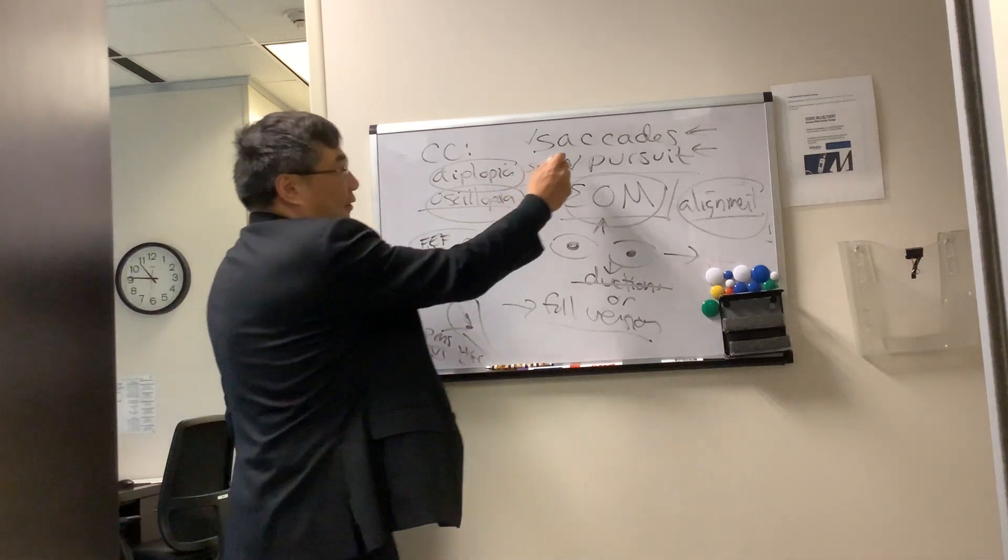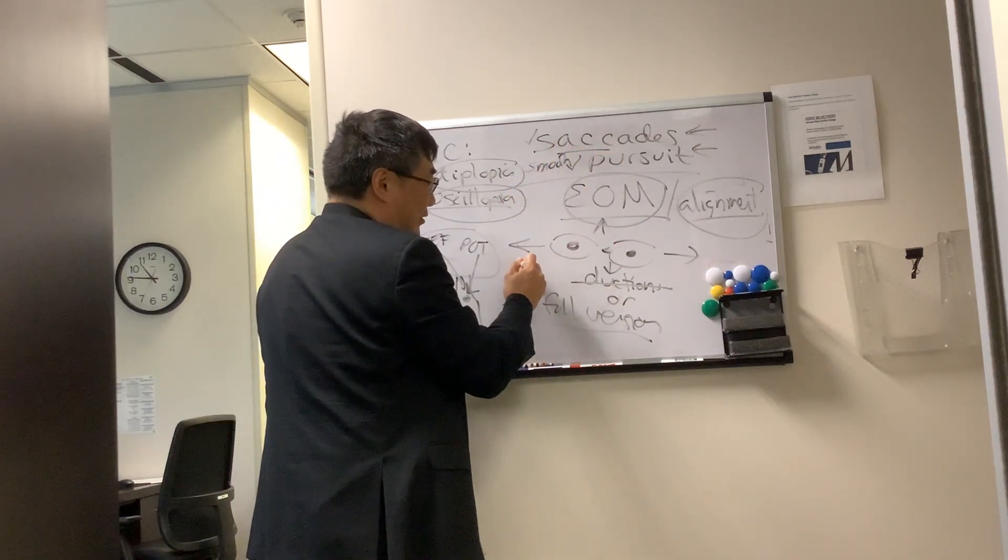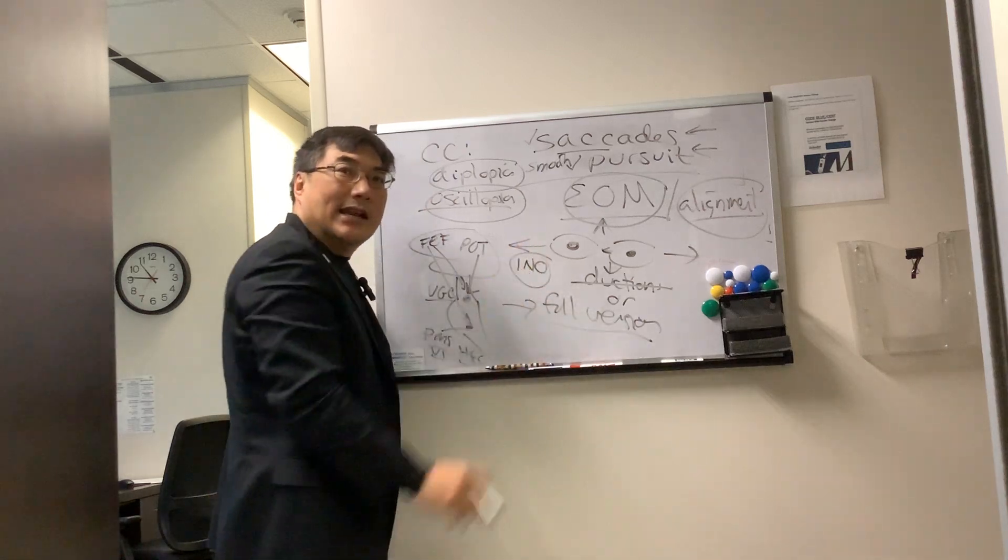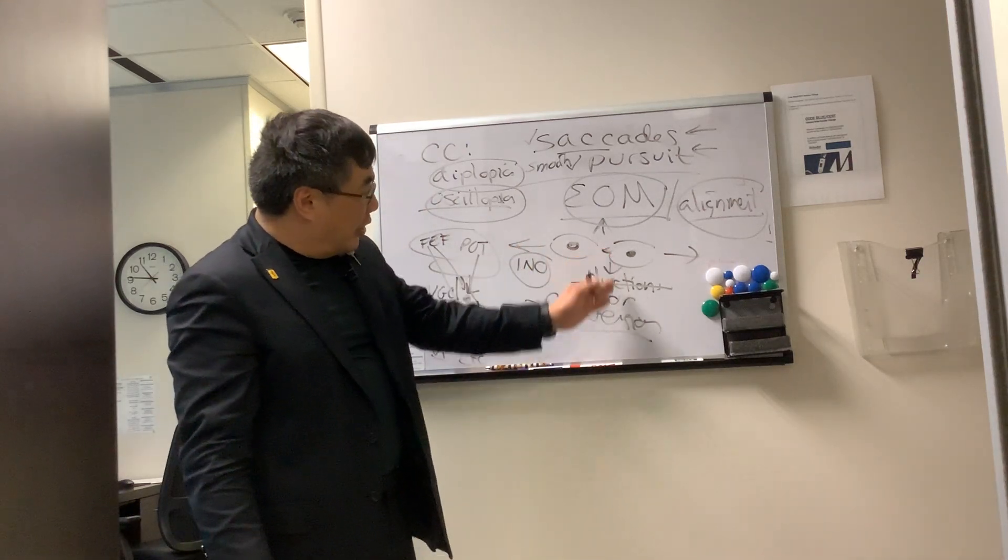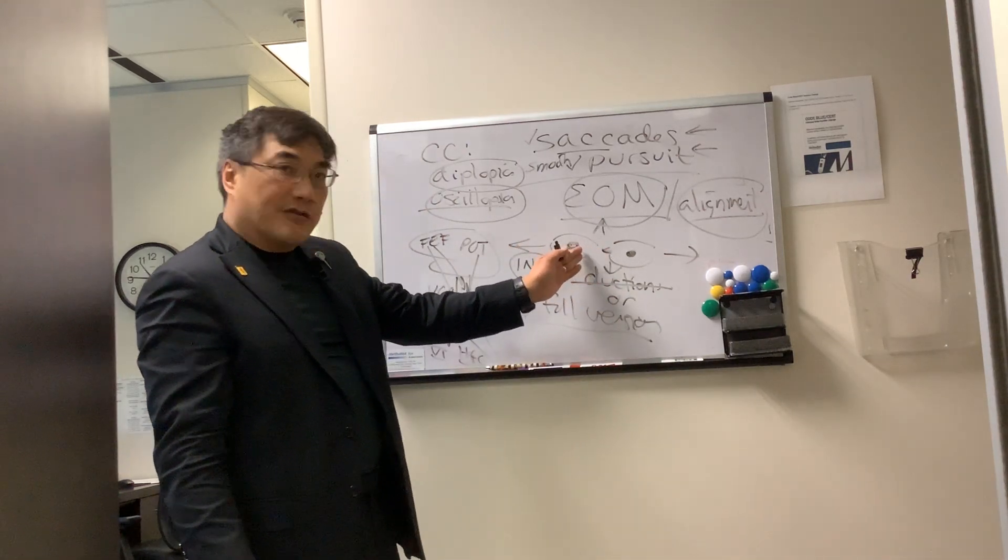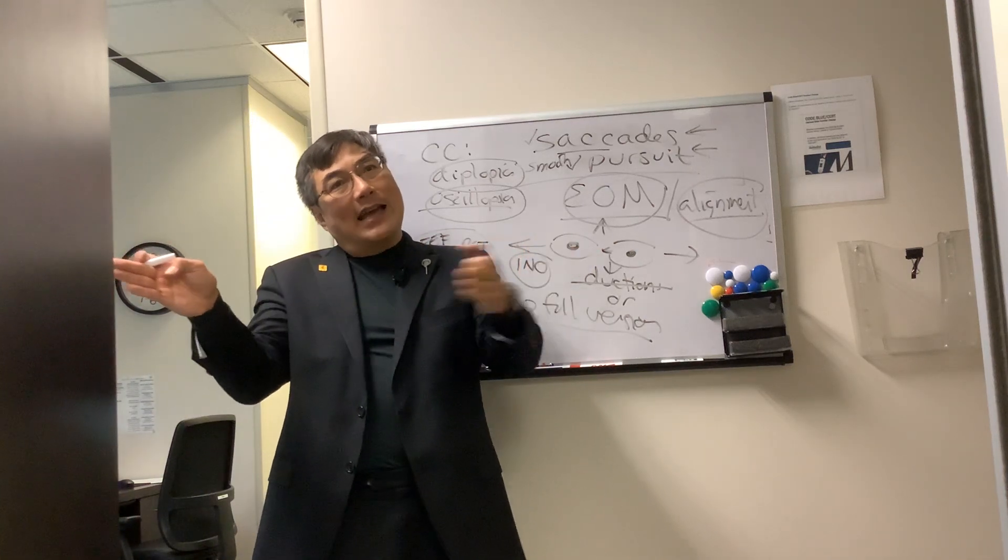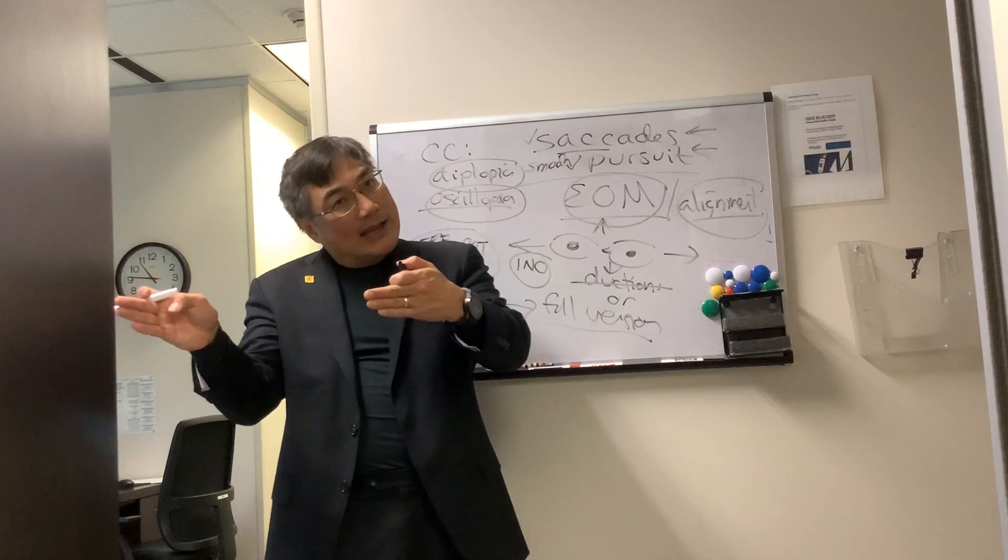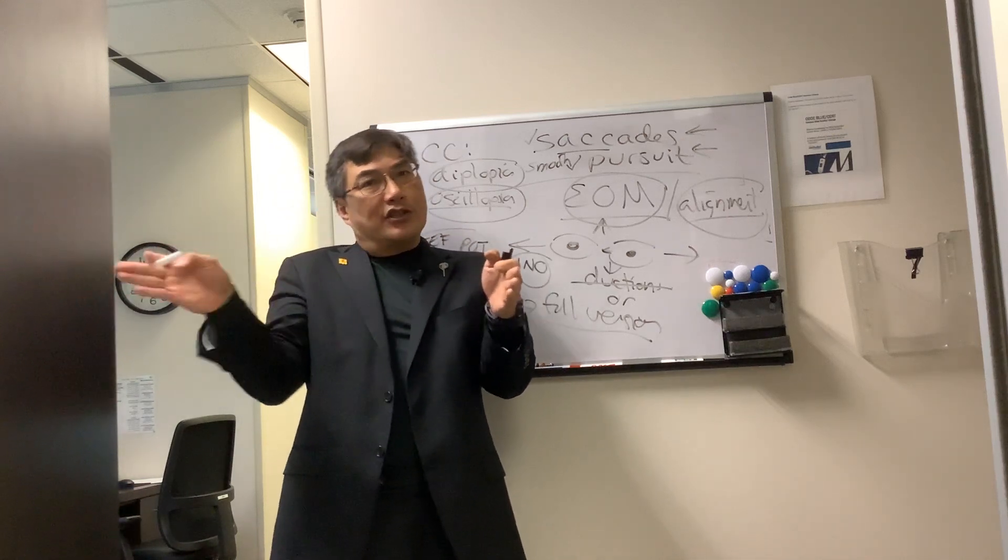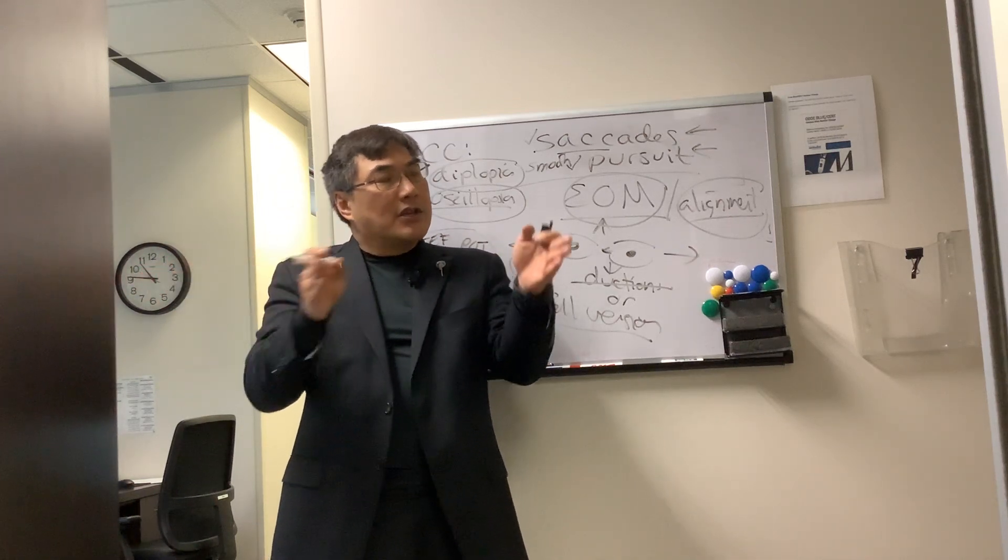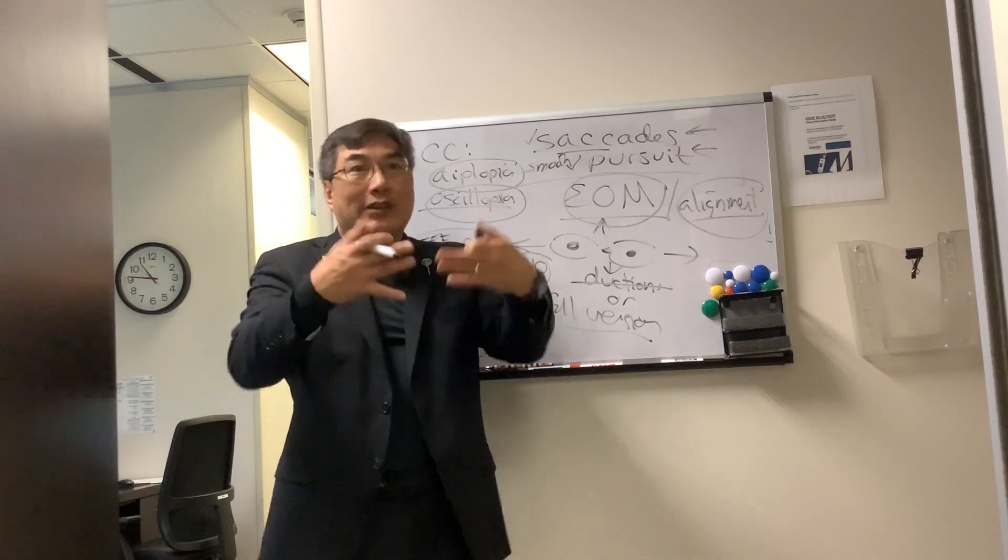And so for the saccade, one of those things is called an internuclear ophthalmoplegia, an INO. So in an INO, they literally might have full version here. But when you do the saccade, there's a saccadic delay or adduction lag. And in the contralateral eye, a dissociated horizontal abducting nystagmus. So in that setting, the saccade brings it out.